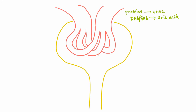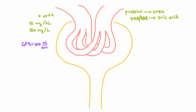Now that we know a little more about the glomerulus, let's think about how these things get excreted. Let's talk about urea. Let's say that urea has a concentration of 10 milligrams per deciliter in the plasma — that's the same as 100 milligrams per liter. And let's say you have a GFR of 100 milliliters per minute, just to use nice round numbers. If urea has no problem getting through the three layers of these capillaries, how much urea is going to be filtered per minute?